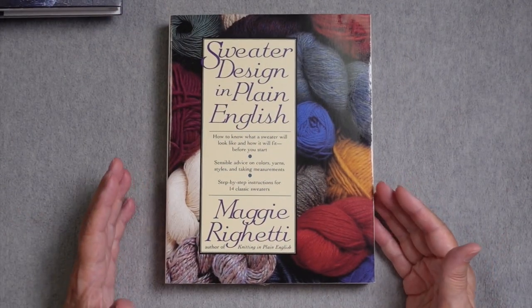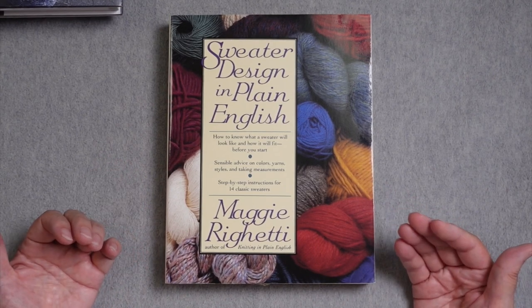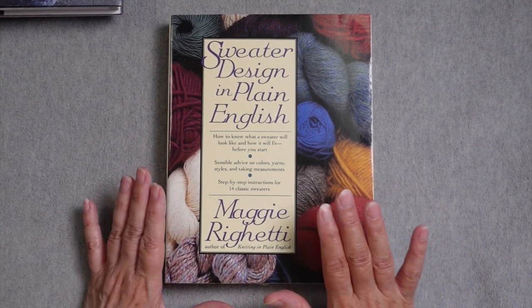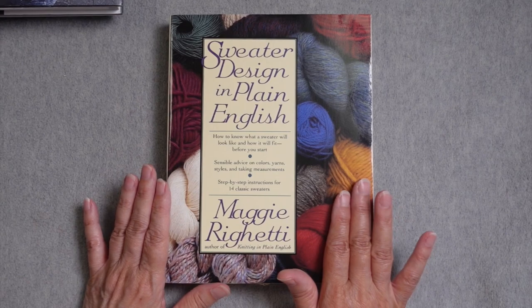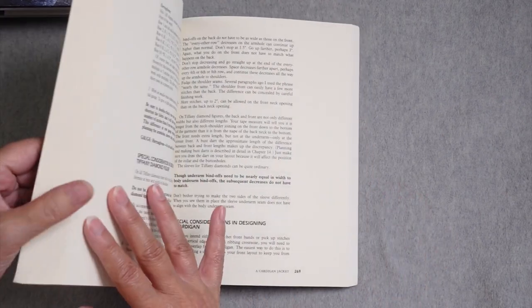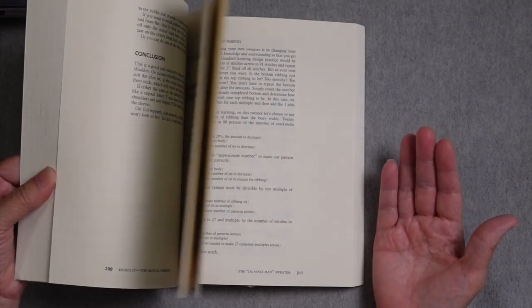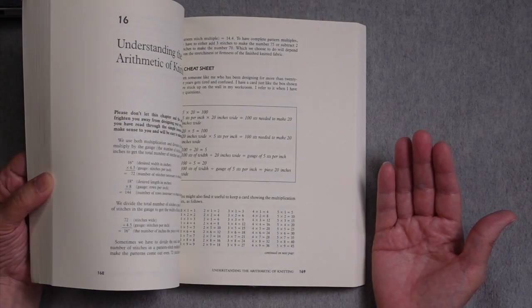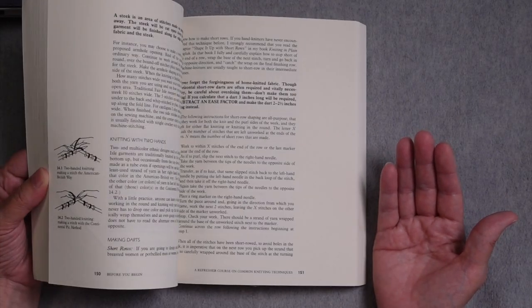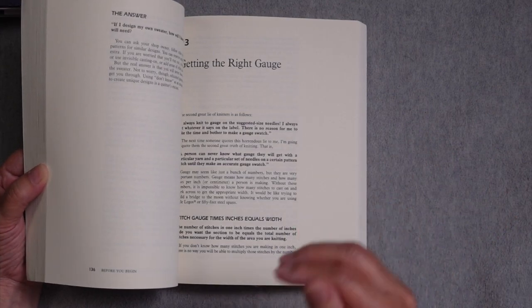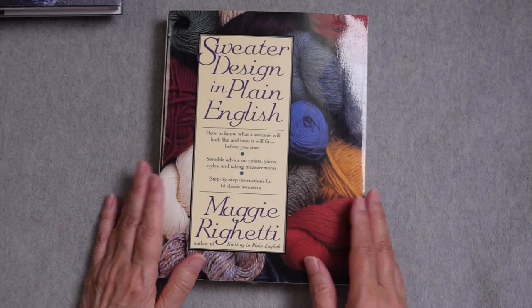This is a book that a lot of knitters like for figuring out, for learning how to design their own sweaters. It has a variety of sweater types in it. It is in black and white and with line drawings, but it does help you with things like calculations and understanding the process of going through designing your own sweater.